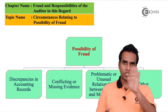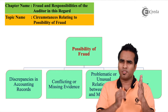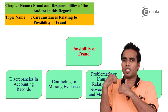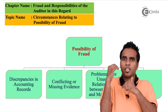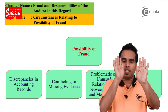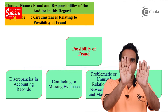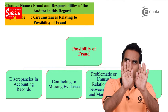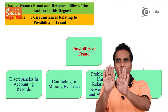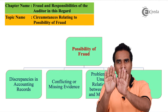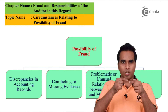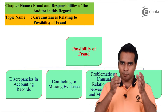First, discrepancies. You can see my screen — there are 4 parts: discrepancies, missing evidence, indicators, unusual relations, client's part, and other parts. We will understand and discuss each one.